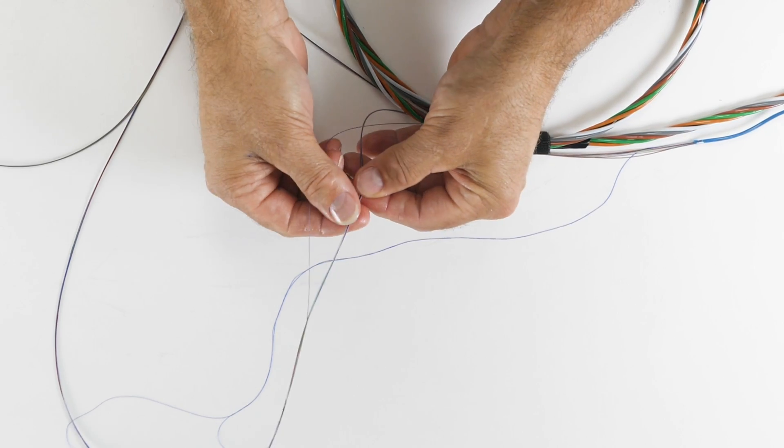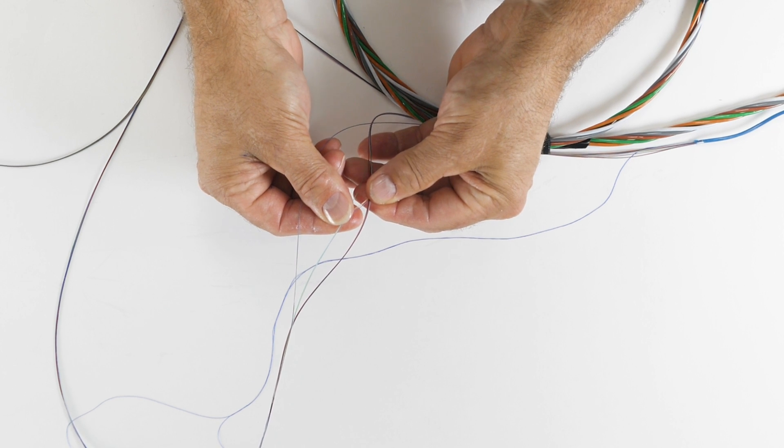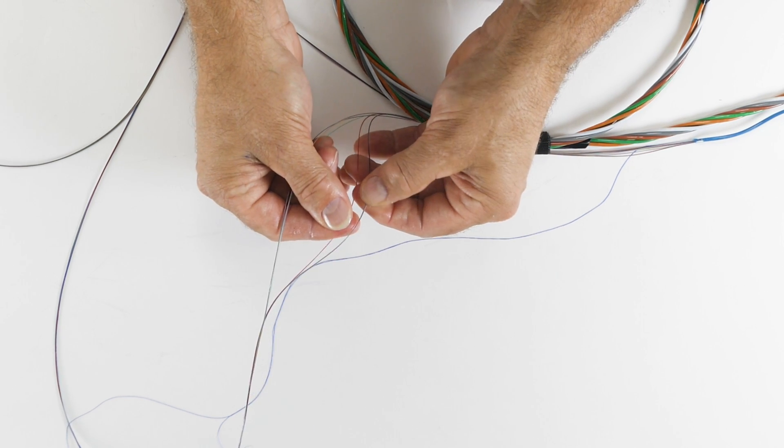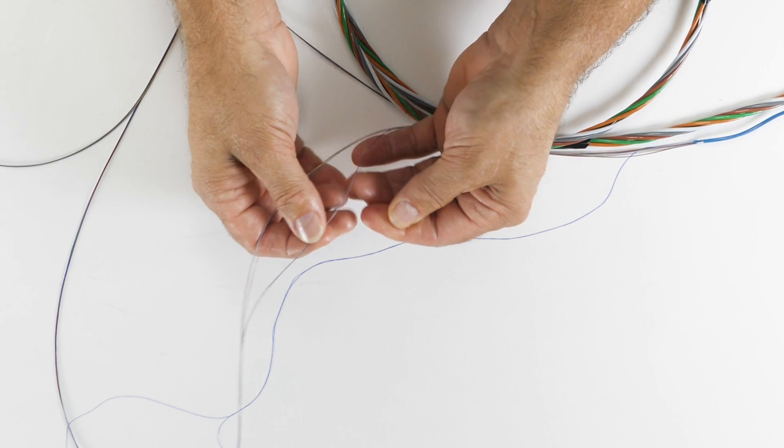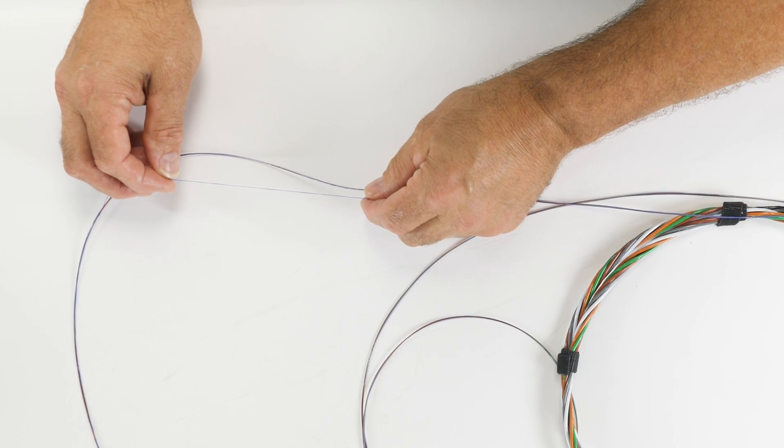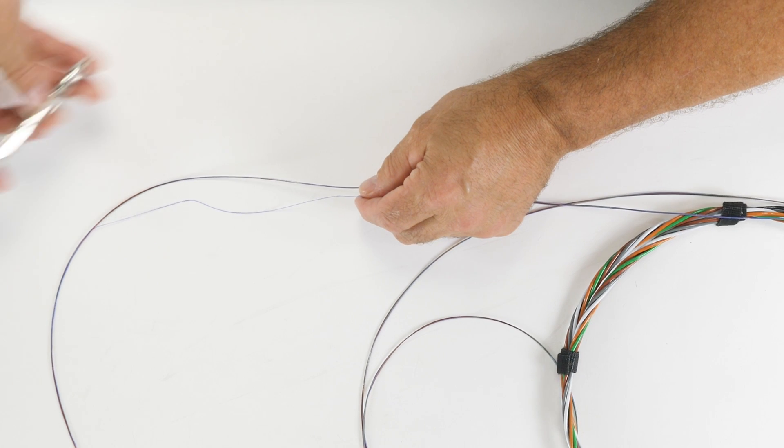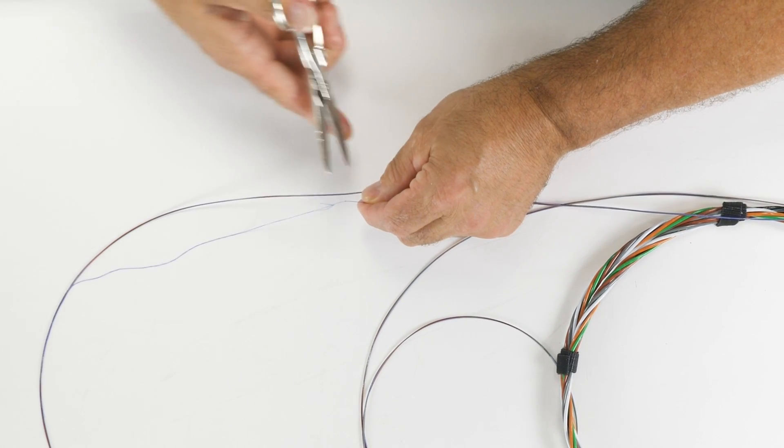Once the groups have been identified, count the number of fibers in each group and identify the color code before separating the entire length. Separate the blue binder group and cut the binder back to approximately 10 inches on each side.